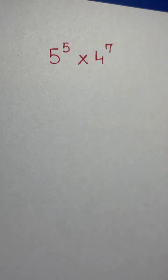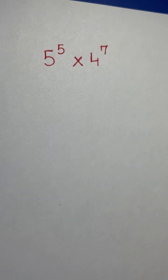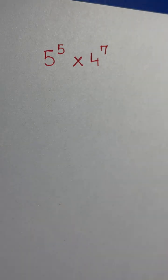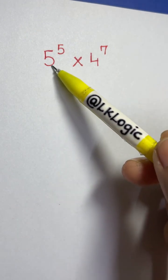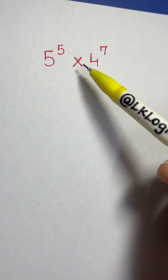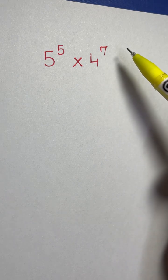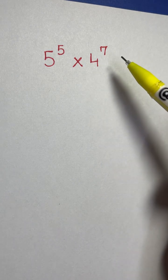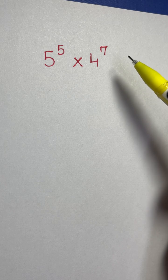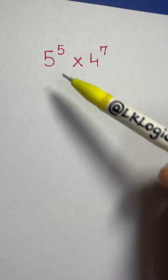Hi everyone, how are you all today? Today we are going to solve this amazing question: you have 5 to the power of 5 times 4 to the power of 7, and you have to calculate it without using a calculator. So before writing it down, how should we do it?